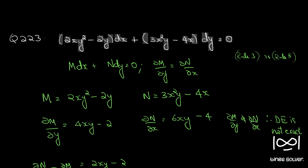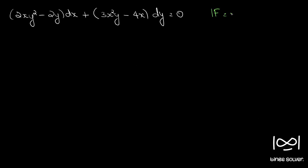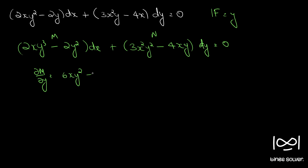Multiplying throughout by the integrating factor y, we get (2xy³ minus 2y²)dx plus (3x²y² minus 4xy)dy equals 0. Now ∂M/∂y gives 6xy² minus 4y, and ∂N/∂x also gives 6xy² minus 4y.